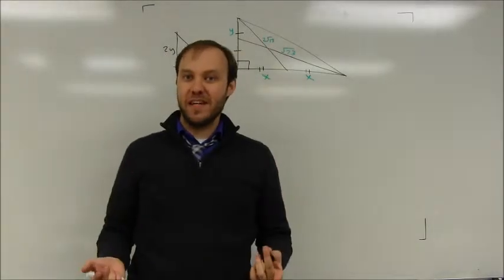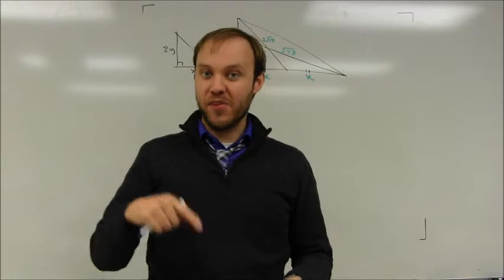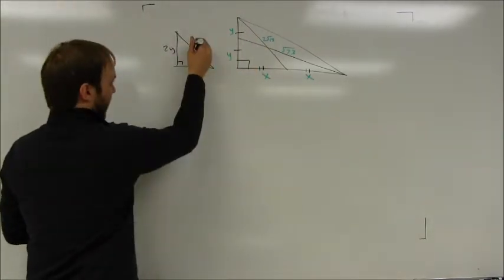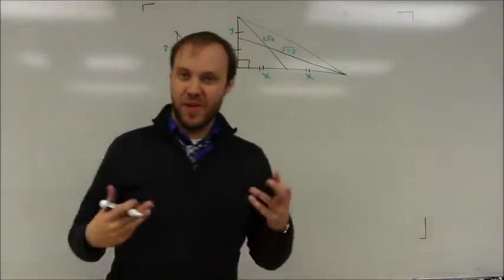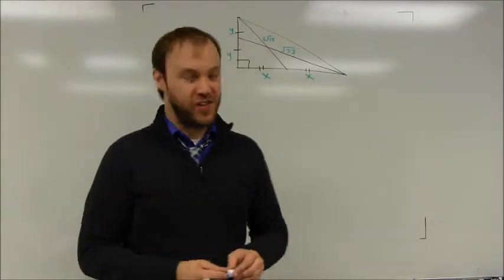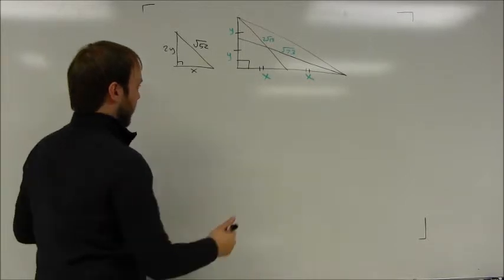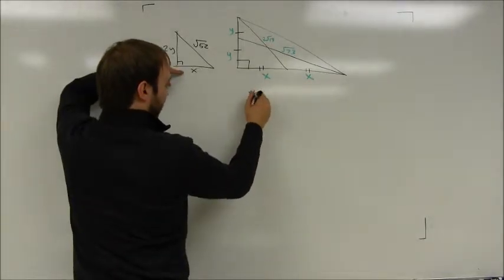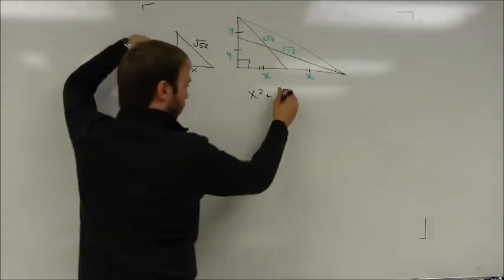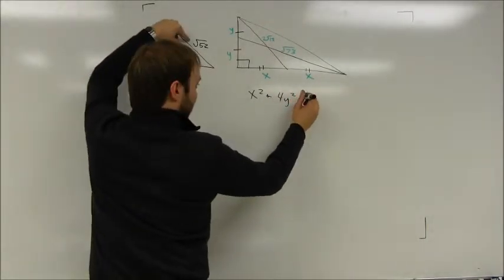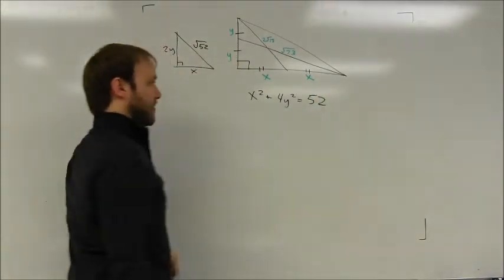2√13, by the way, that would be √4 times √13. 4 times 13 is 52. I'm actually going to write that as √52 instead of √13, just because it will make the simplification a bit easier later. So according to the Pythagorean theorem, I get the first equation, that x² plus, it's (2y)², that's going to be 4y², is equal to the square of √52, which is just equal to 52.